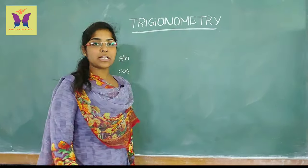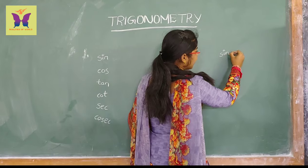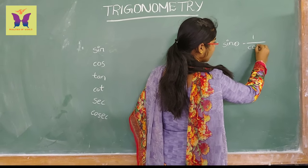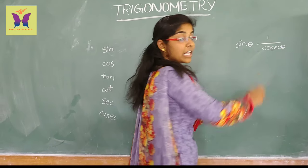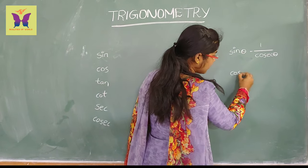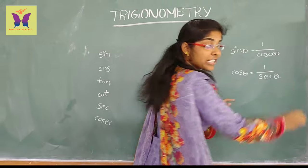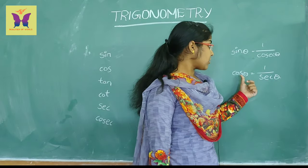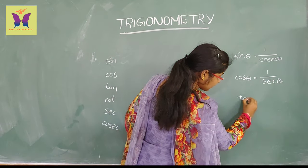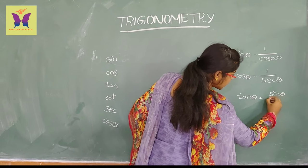Next, we will write the reciprocals. Sin theta equals 1 by cosec theta. Automatically, cosec theta equals 1 by sin theta. Next, cos theta equals 1 by sec theta, and sec theta equals 1 by cos theta. This is the reciprocal identity. Next, tan theta equals sin theta by cos theta.